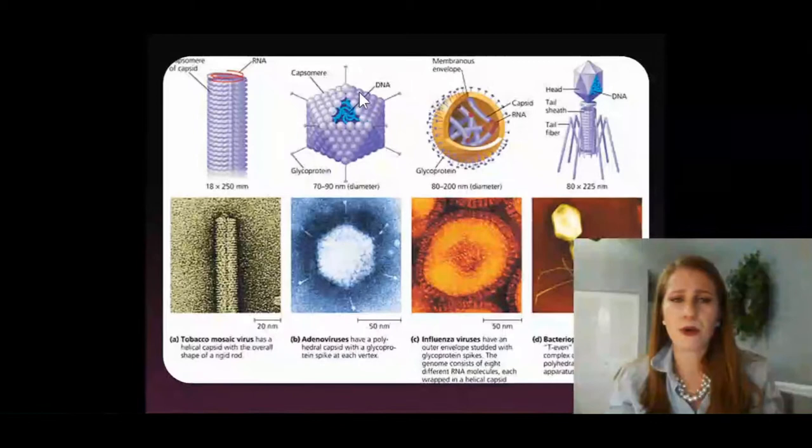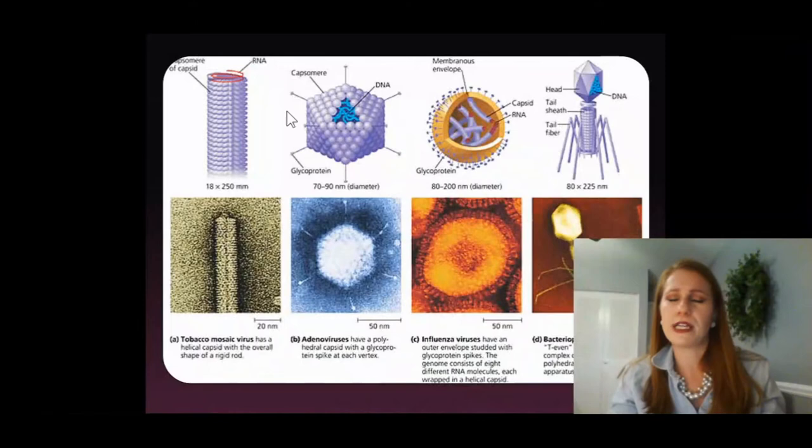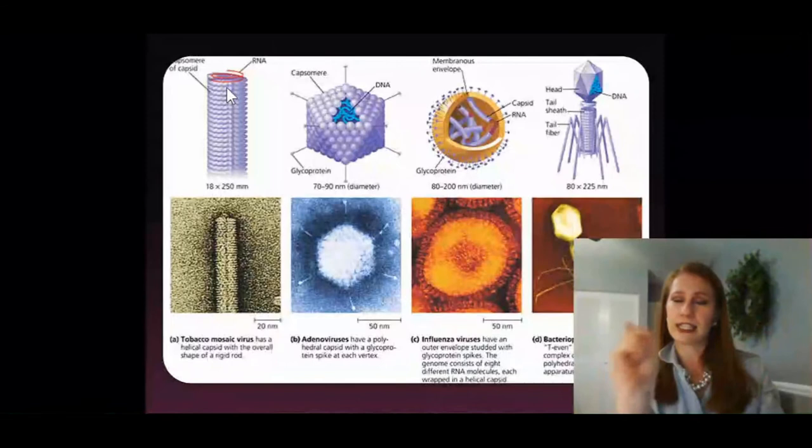We also have adenoviruses, where we've got that protein outer coat here. You've got DNA in the middle. And you've got those spindly glycoproteins on the outside. It's a little more geometric — it's not quite as spherical. And then we have over here a mosaic virus. It's got a helix, which means it's a twisted spiral, and in the middle of it is the RNA. You can see that up here.